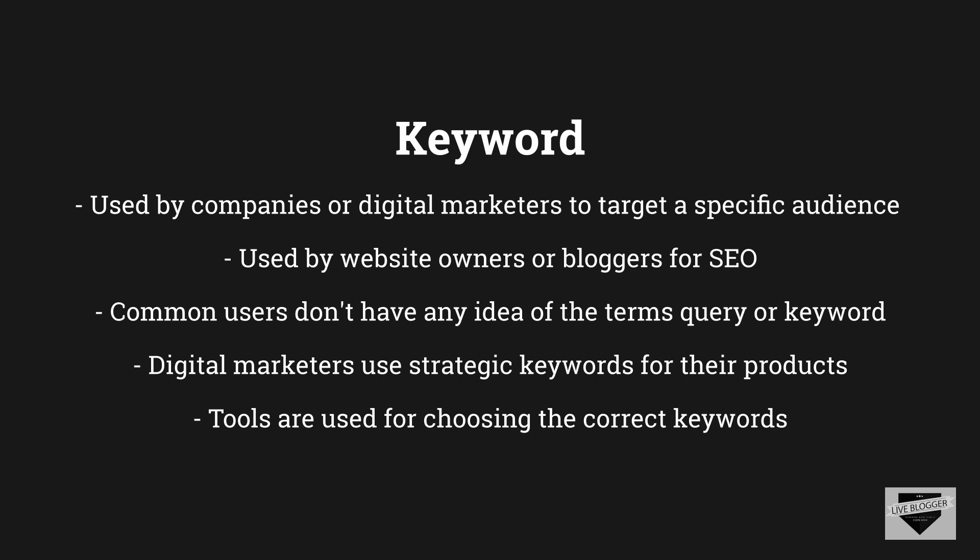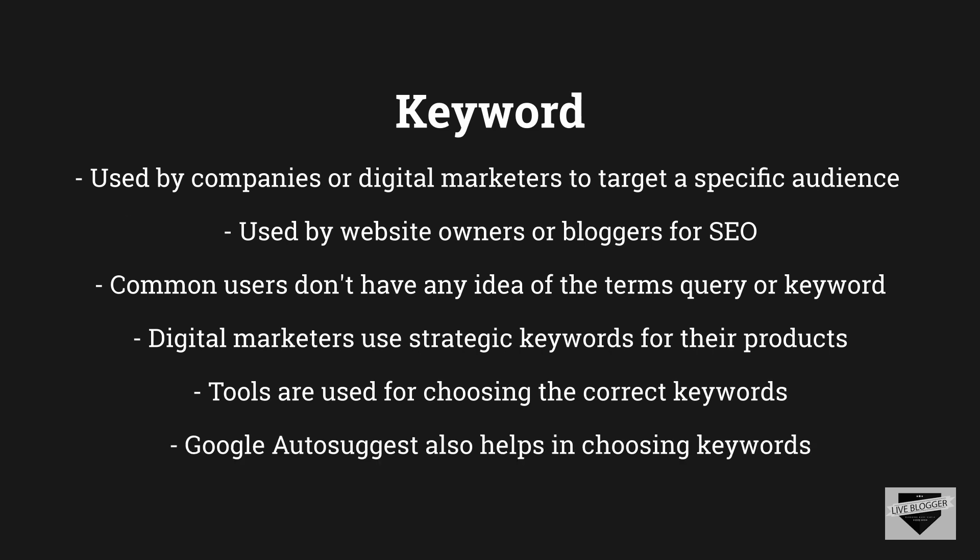One such tool is called Keyword Planner from Google. There are many other tools as well that can help you achieve this. The digital marketer can also go to Google, type in the keyword they are targeting, and from the search query suggestions that Google shows, get an idea of what queries a typical visitor has for a particular keyword.